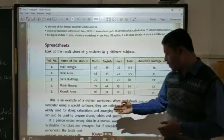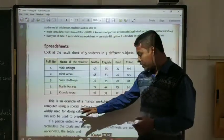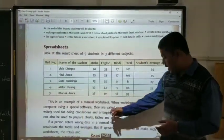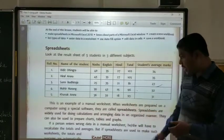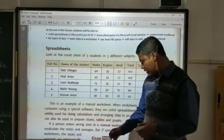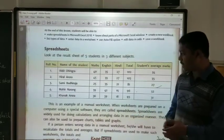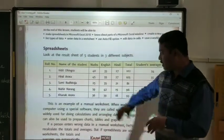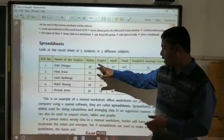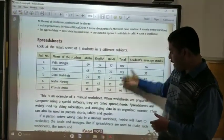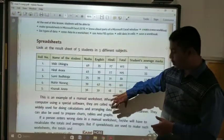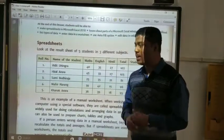So this is an example of a manual worksheet. When worksheets are prepared for the computer using a special software, they are called spreadsheets. Spreadsheets are widely used for doing calculations and arranging data in an organized manner. So suppose if you are considering here, if I want the total of 48, 25 and 27, this total can be done easily on Microsoft Excel. And if you drag it, all the totals will be available.